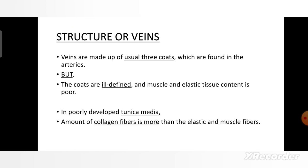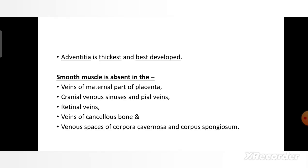Next are the structures of the veins. Veins are made up of usually three coats which are also found in arteries, but the coats are ill-defined and muscle and elastic tissue content is poor. In the poorly developed tunica media, the amount of collagen fiber is more than that of elastic and muscle fibers. The adventicia in veins is the thickest and best developed.